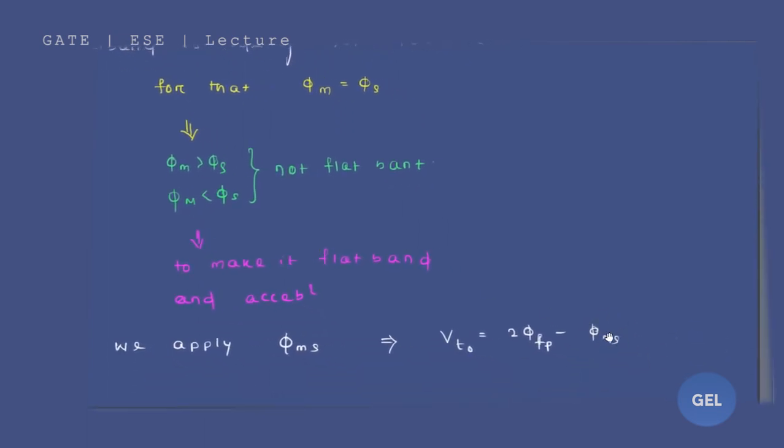That is phi_ms. So your VT naught expression, we got 2 phi fp in our previous video lecture. So in this we add this term - phi_ms.